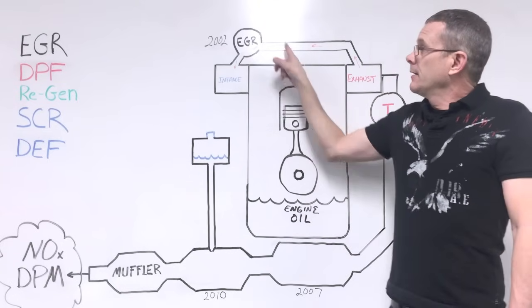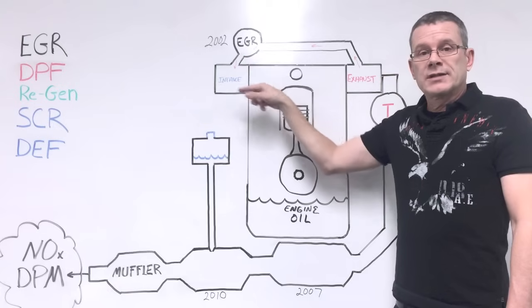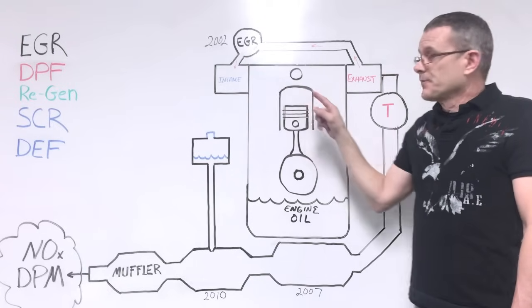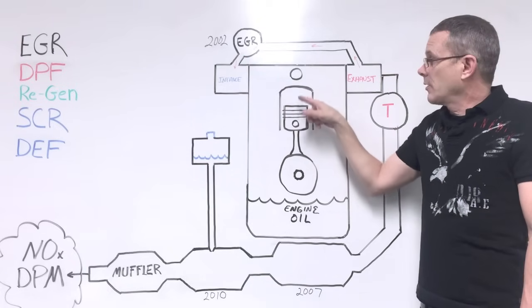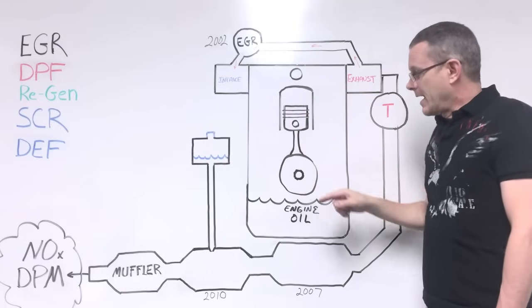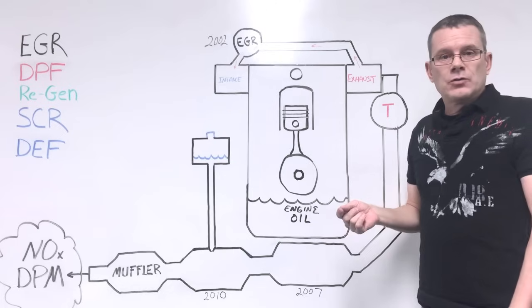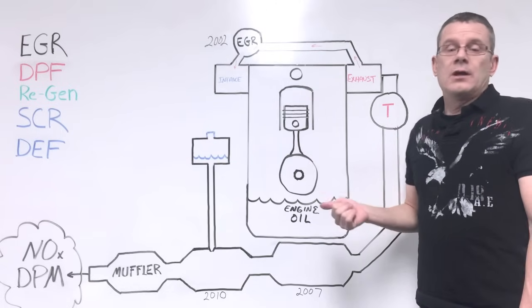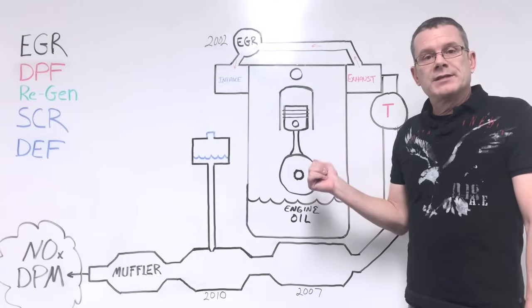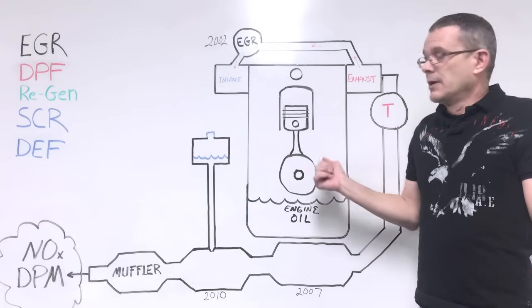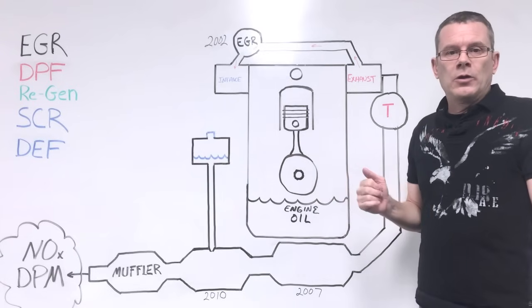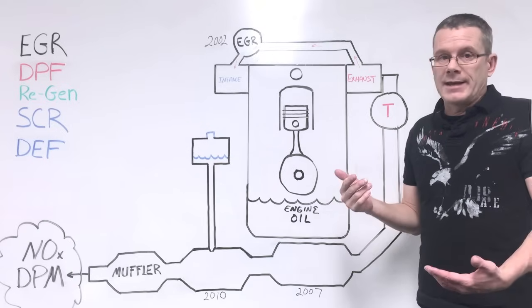When that soot comes back in through the exhaust, it coats the intake and the inside of the combustion chamber and blows by, or washes by, and ends up in your oil. That soot is abrasive and can cause damage or premature wear to the bearings and the other surfaces that the oil is supposed to protect and lubricate.